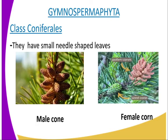The fourth characteristic is that the xylem consists mainly of tracheids, while the phloem does not have companion cells.